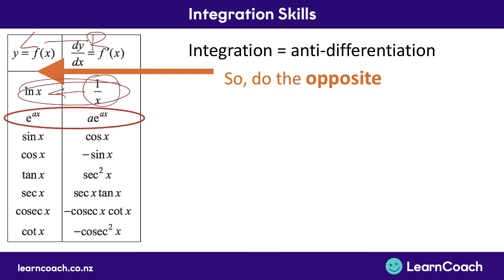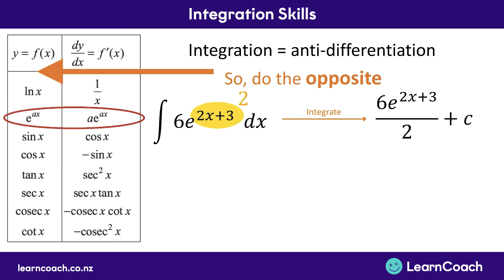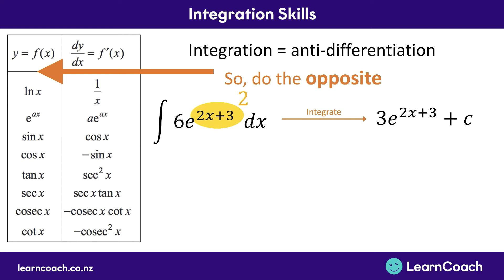First, let's look at e's. If we want to integrate 6e to the power of 2x plus 3, we derive that power. The derivative of 2x plus 3 is just 2. So we write out our original expression — that's still 6e to the power of 2x plus 3 — and we divide by that derivative, which is 2. Of course, we still have plus c on the end. We can simplify that: 6 divided by 2 gives us 3e to the power of 2x plus 3, still plus c.